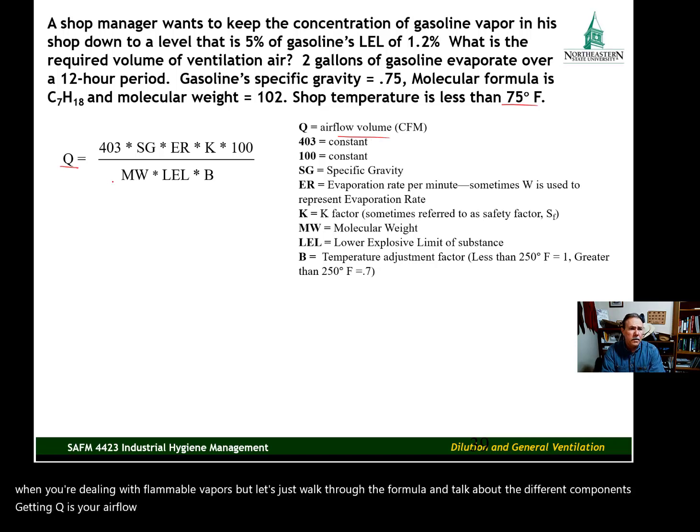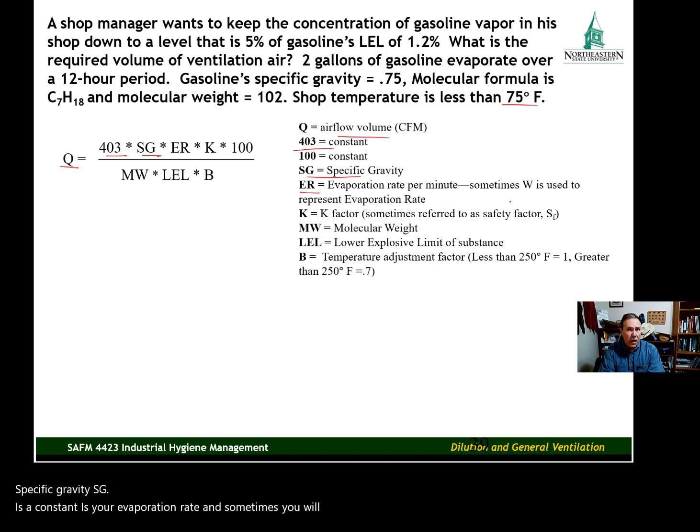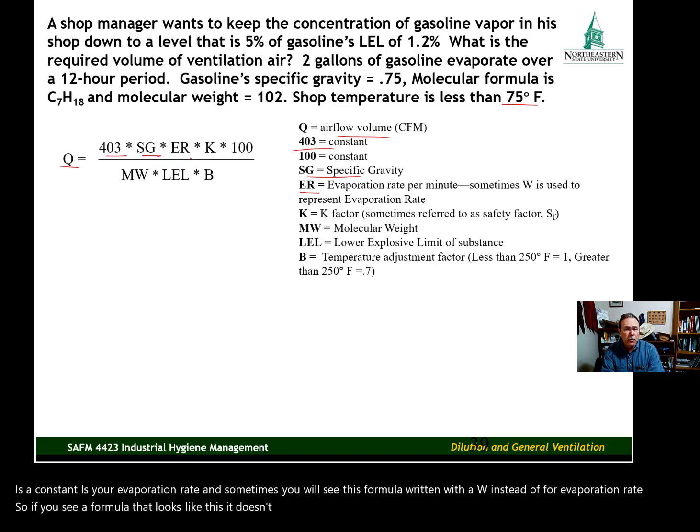Let's walk through the formula. Q is your airflow volume or airflow rate. 403 is a constant. SG is specific gravity. ER is your evaporation rate, and sometimes you'll see this formula written with W instead of ER for evaporation rate. This is a formula you're likely to see provided on the CSP exam.